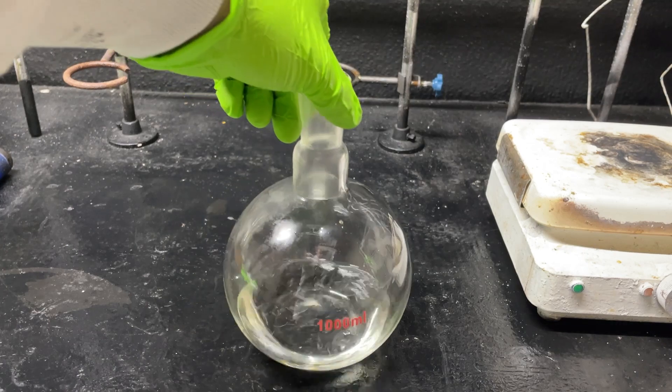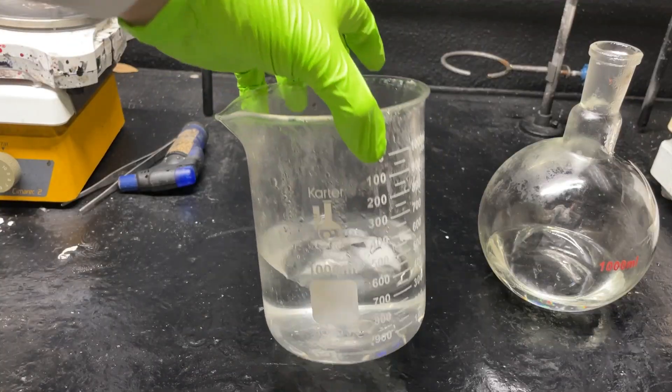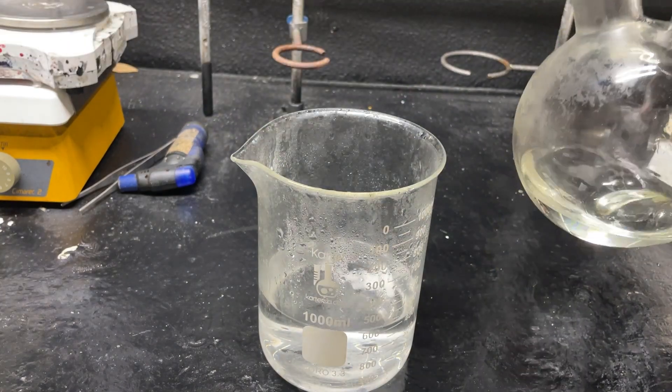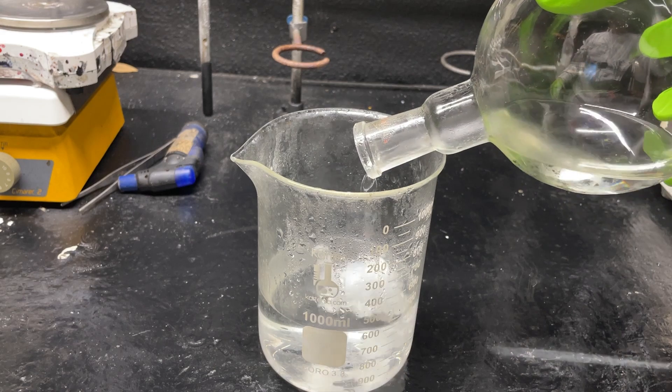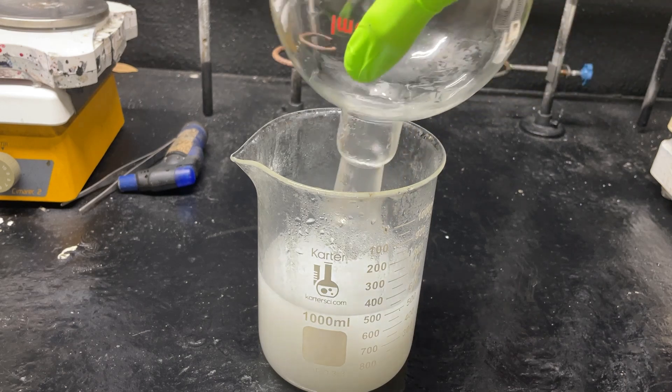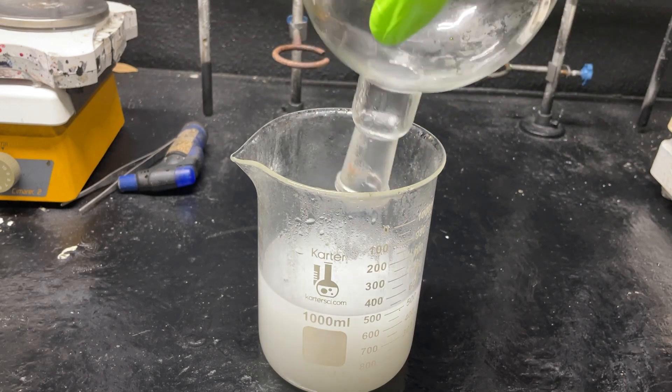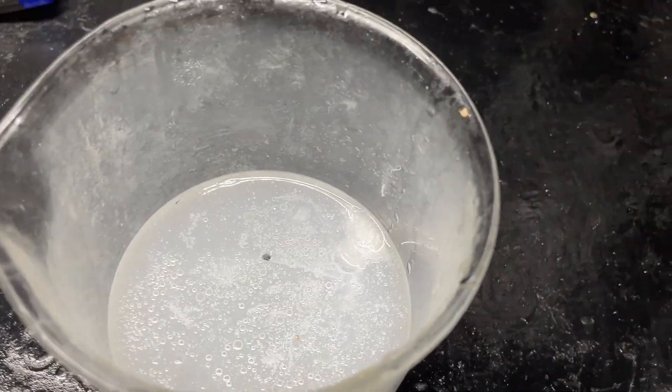Okay now to a beaker of ice water I'm going to pour our solution into here very carefully. You'll see there is some kind of precipitate on the surface - there's an oil and that is our chloroacetophenone.